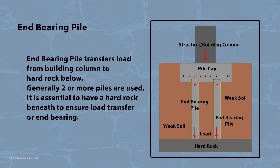End bearing piles, as the name suggests, transfer load from columns up to the hard rock below. Generally, load from one column is transferred by means of two or more piles. It is essential to have a hard rock beneath the piles to ensure load transfer or end bearing.